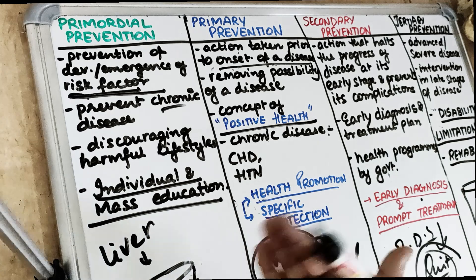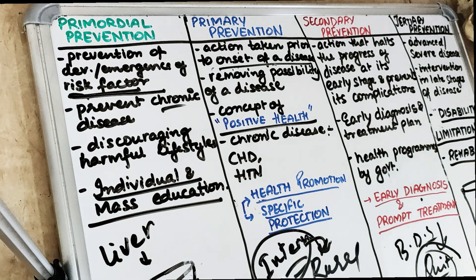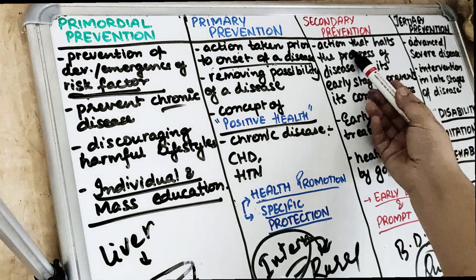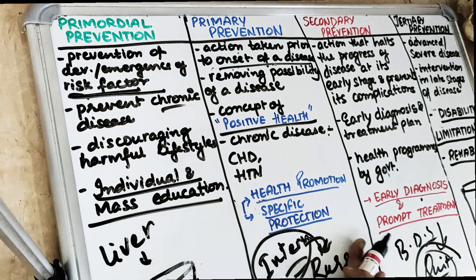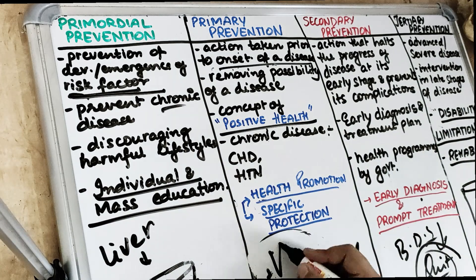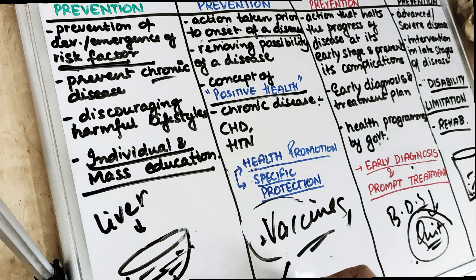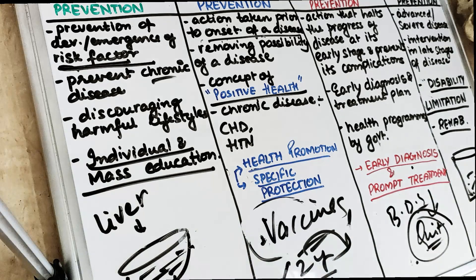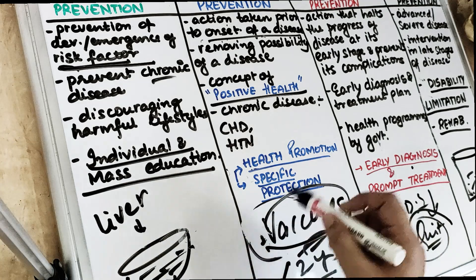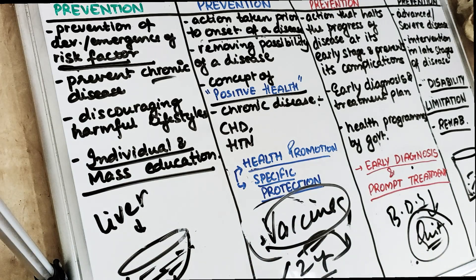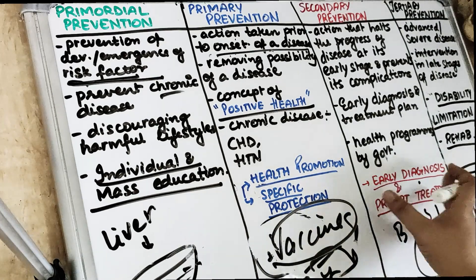Coming to a dental example of primary prevention: vaccines are basically the primary level of prevention. Suppose you are giving a polio vaccine to a child under 2 years — you are giving the vaccine so that after 2 years there is no development of polio. Most vaccines are an example of primary prevention.